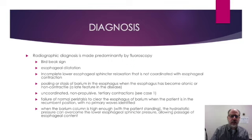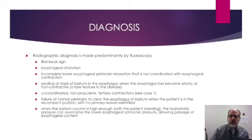There will be a failure of normal peristalsis to clear the esophagus when the patient is in the recumbent position. When the barium column is high enough, typically with the patient standing, the hydrostatic pressure of the retained fluid within the esophagus can overcome the lower esophageal sphincter pressure and allow passage of the esophageal contents.